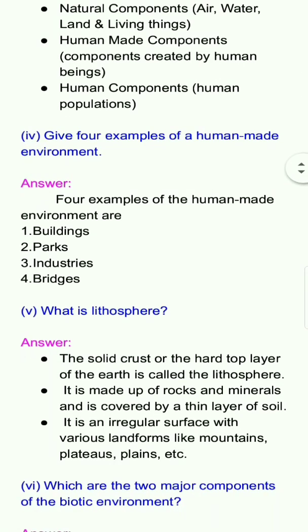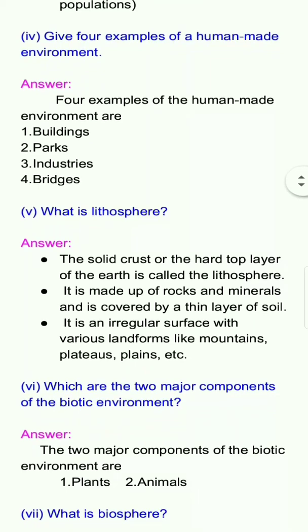Fifth question: What is lithosphere? Answer: The solid crust or the top layer of the earth is called the lithosphere. It is made up of rocks and minerals and is covered by a thin layer of soil. It is an irregular surface with various landforms like mountains, plateaus, plains, etc.